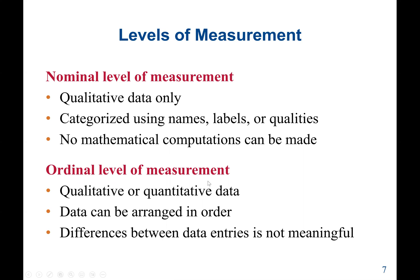The next level is the ordinal level of measurement, which is based on order. Examples include medium, large, extra large, or strong versus not too strong. Ordinal data can be qualitative — like medium, large, extra large — or quantitative — like first, second, third. The key point is that data can be arranged in order. However, the differences between data entries are not meaningful.